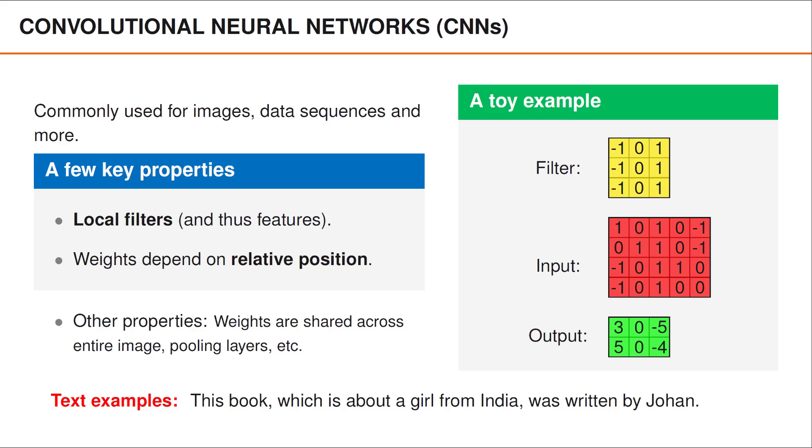Here is another related sentence: This book, which is about a girl from India, was written by Yuan. In spite of its simplicity, we start to imagine that it may not be ideal to focus on local features, since closely connected words like written and book may end up far apart depending on how we formulate the sentence.